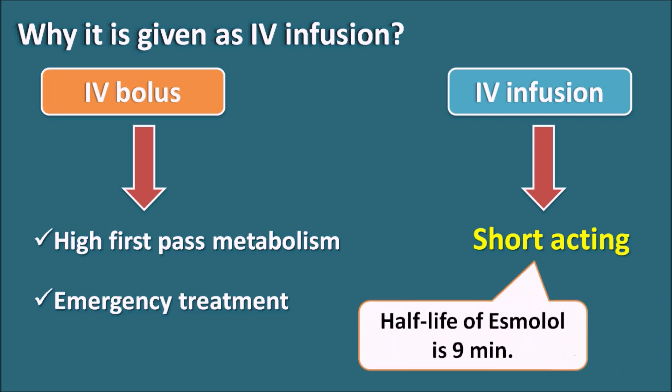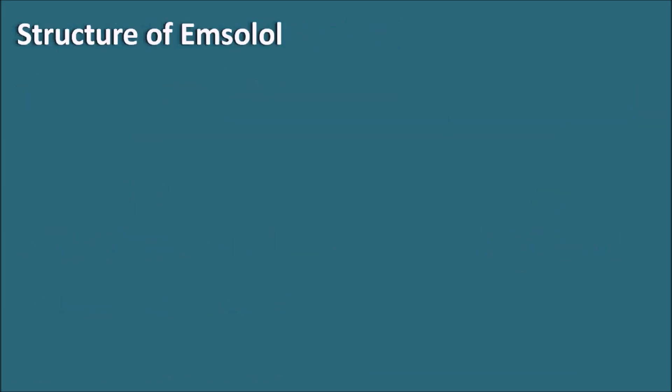For example, esmolol has a half-life of around 9 minutes. Half of the drug is cleared every 9 minutes, so it is very short-acting. Therefore, we have to administer the drug continuously by IV infusion in order to retain its pharmacological actions. Before seeing why esmolol is short-acting, let us first look at its structure.